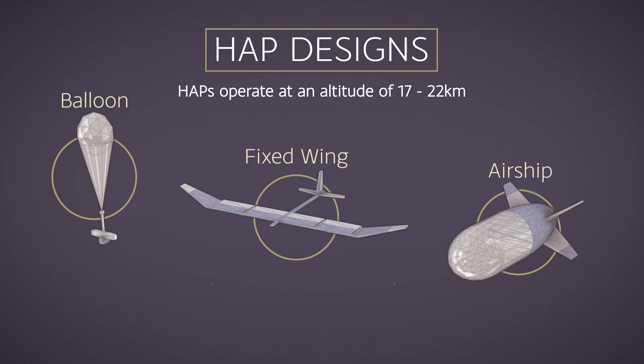They are often powered by a combination of solar power and batteries. Solar power is used to power the craft and payload, with the excess stored in the batteries for use during night.